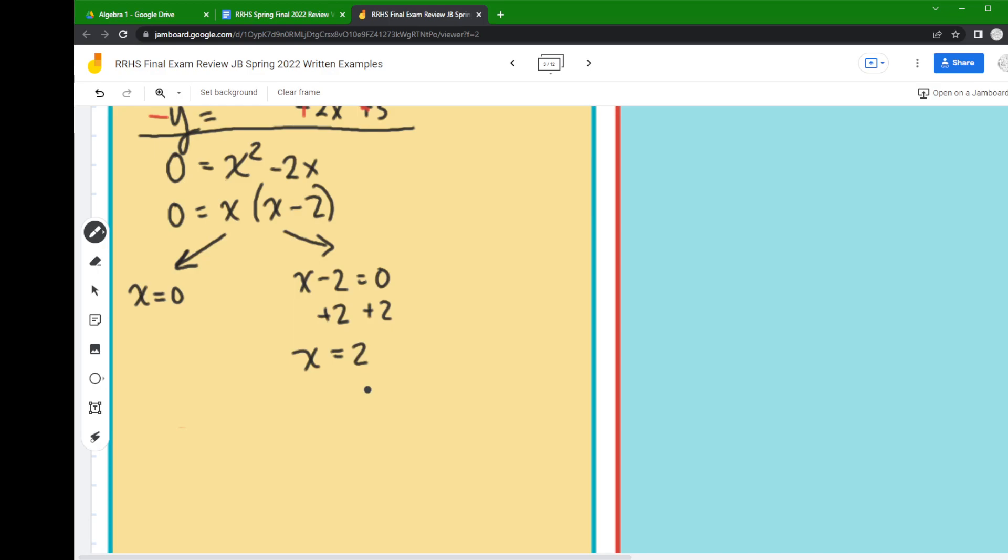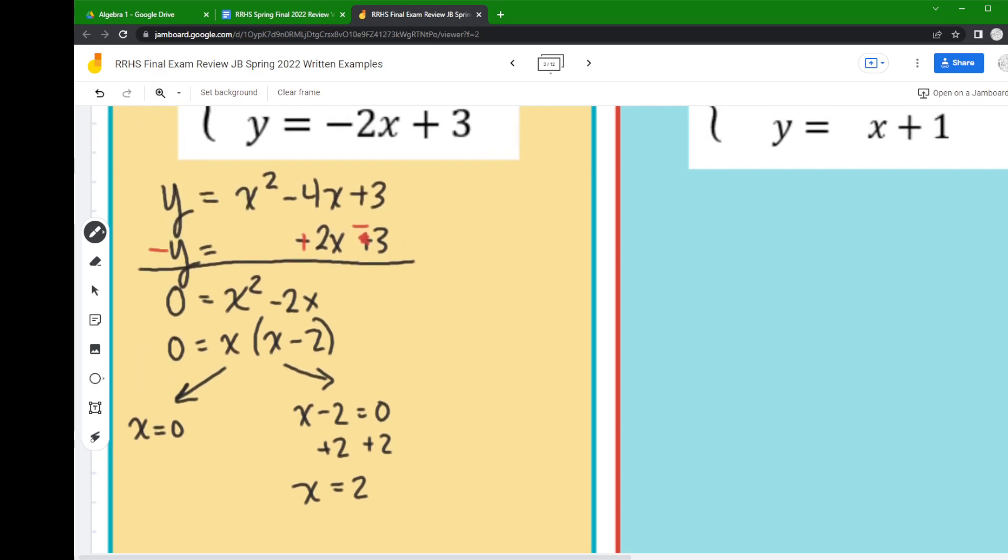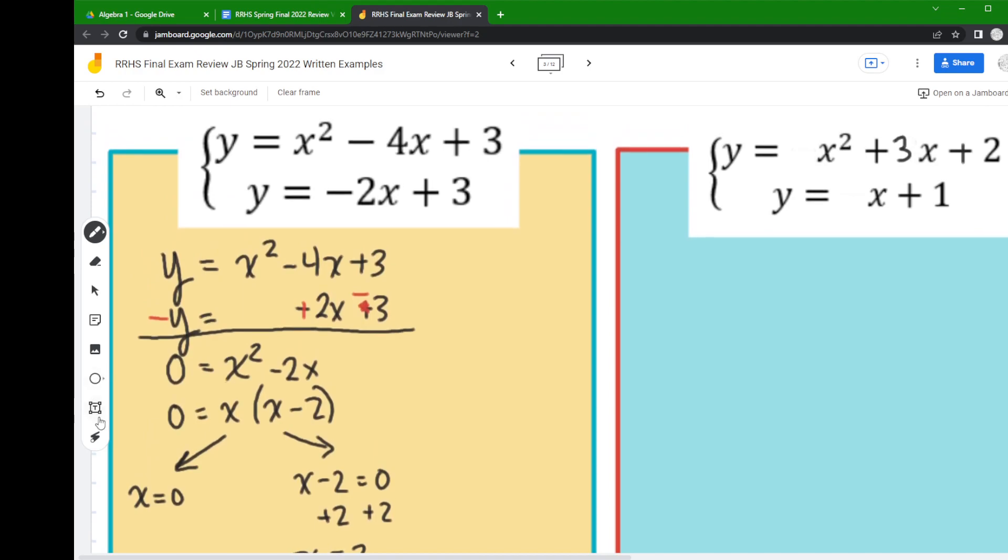Now remember we're looking for points of intersection. We're looking for where the line and the parabola cross each other. So finding the x value, that's just half the work because you need a y value to complete your ordered pairs. So in order to find the y value, what you need to do is go back to your original equations.